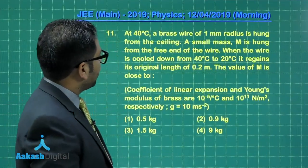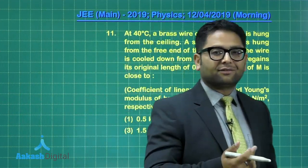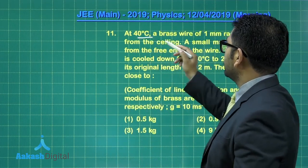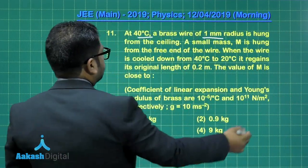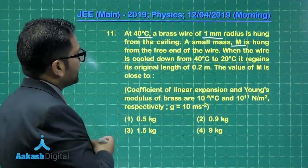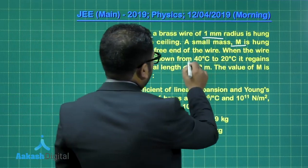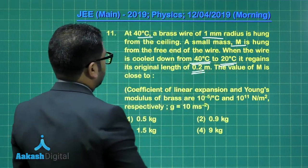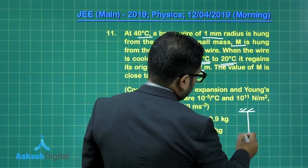Time to move to the next one. Eleventh question - a nice fusion of thermal expansion and properties of bulk matter. At 40 degree centigrade, a brass wire of this much radius is hung from the ceiling. A small mass capital M is hung from the free end of the wire, which helps in the elongation. When the wire is cooled from 40 degree to 20 degree, it regains its original length.